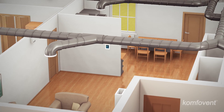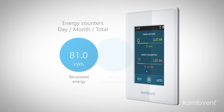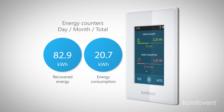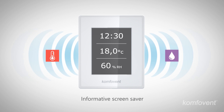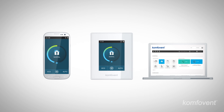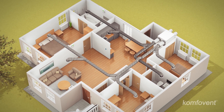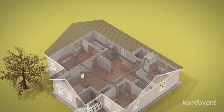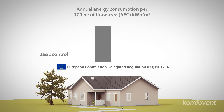Smart Control informs the user about the performance of the ventilation system. You can find out the heating energy savings and energy consumption of the air handling unit. An informative screen saver always shows the key indoor climate values and ventilation parameters. Special software allows connecting and controlling your air handling unit remotely at any time. With Smart Control, you can operate your ventilation system comfortably and properly by selecting the most efficient settings. It has been confirmed that Smart Control reduces energy costs for ventilation more than two-fold.